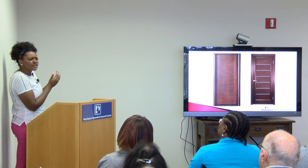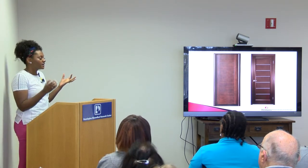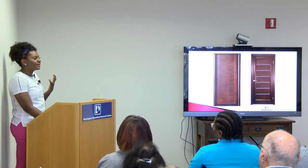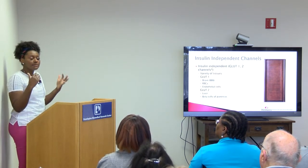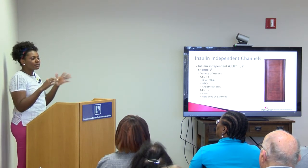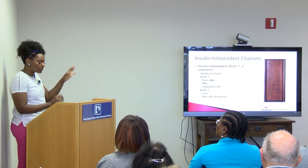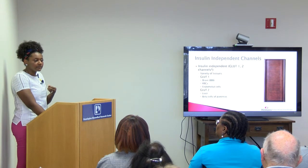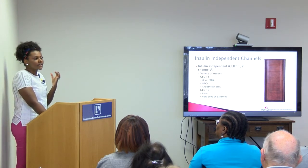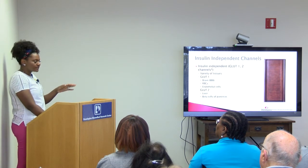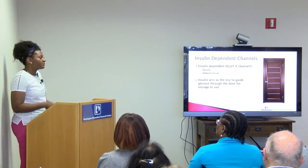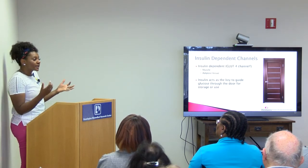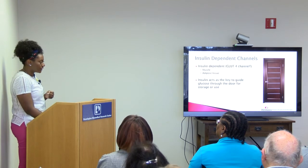Think about insulin as the key to certain doors on certain cells. Insulin will unlock the door and allow glucose to enter so the cell can use it for energy. Some cells have a lock and some don't — some cells need insulin and others do not. Think about your brain: you want your brain to be able to use glucose at will to keep you going. Your red blood cells and liver also do not require insulin to use glucose. But muscle cells and fat cells do require insulin to unlock the door. The more you exercise, the more you upregulate those doors that insulin can open.